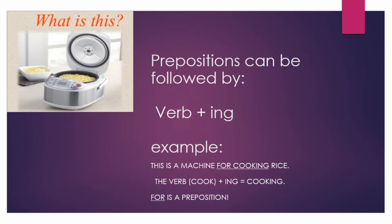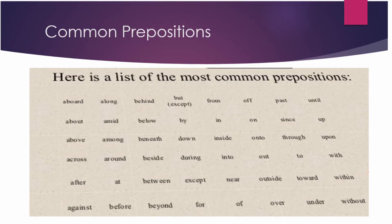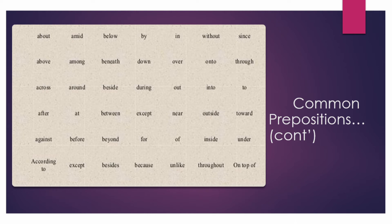A preposition can be followed by a verb with the ending '-ing.' For example, looking at a picture: this is a machine used for cooking rice — the verb 'cook' plus '-ing' gives us 'cooking,' and 'for' is the preposition. Here are some of the most common prepositions: above, about, along, behind, below, by, in, down, since, among, beneath, over, unto, and through.